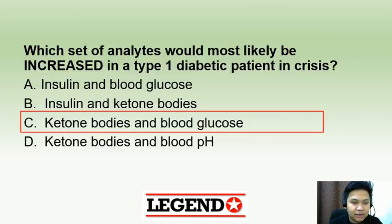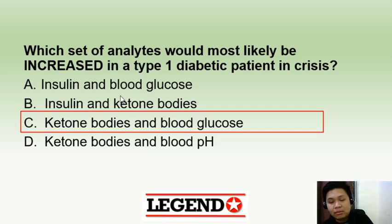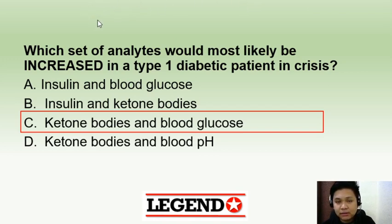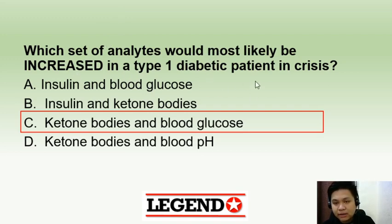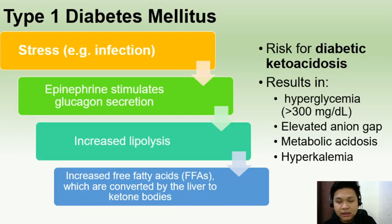Which set of analytes would most likely be increased in a type 1 diabetic patient? The answer is ketone bodies and blood glucose. In a type 1 patient, you expect insulin to be decreased or deficient, so choices A and B are incorrect. Letter D is also incorrect since the blood pH in type 1 patients undergoing crisis would be decreased — they would be undergoing acidosis. So the answer is letter C.